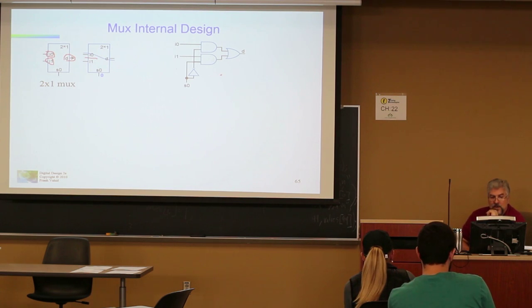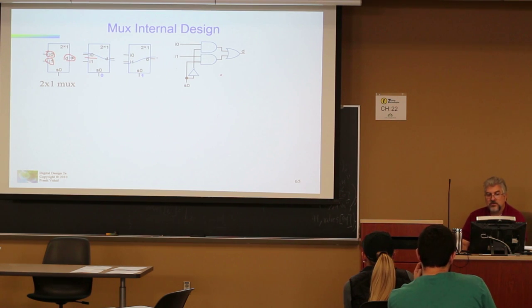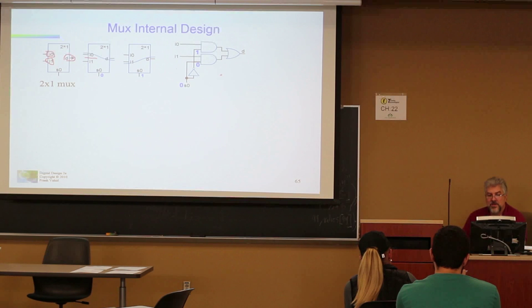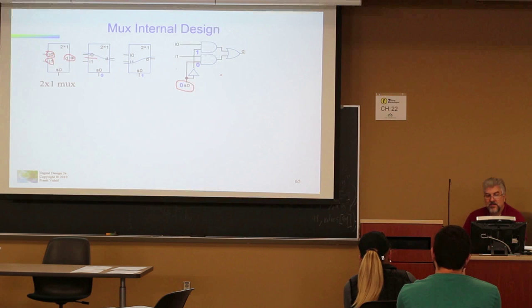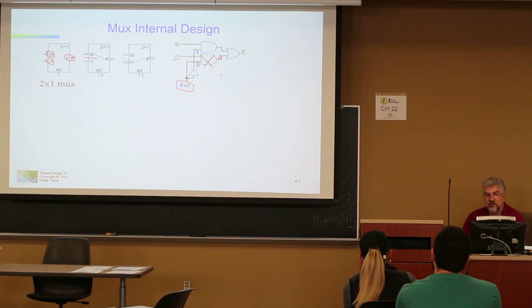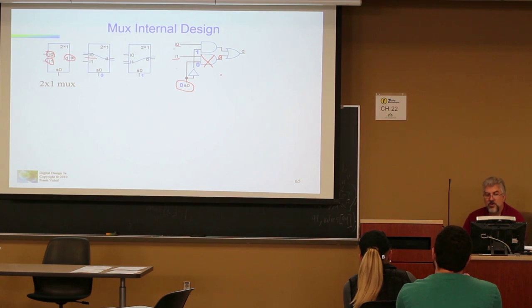However, if you input a 1 on S, that means you'll route I1 to D. So if you have a 0 on S, the input to that AND gate is 0 and I1 will never be selected — meaning that AND gate output will always be 0, no matter what I1 is. But the input I0, if that is 1, then 1 AND 1 is 1.